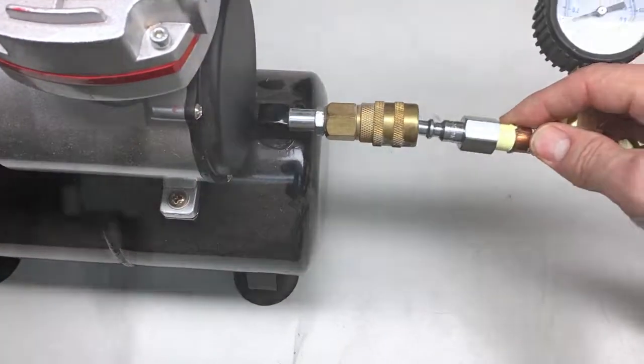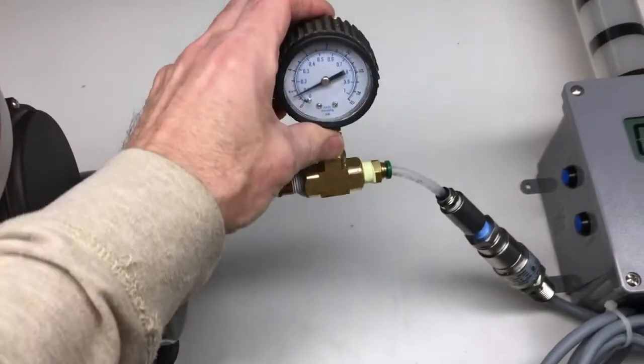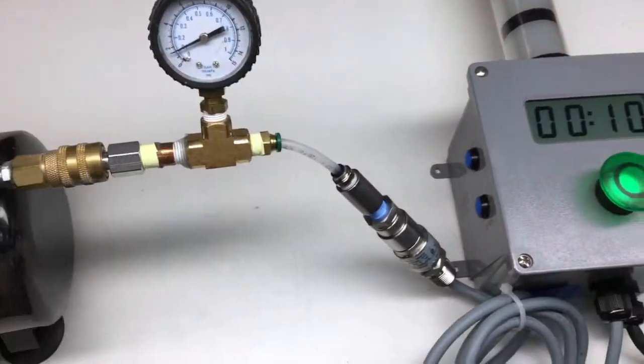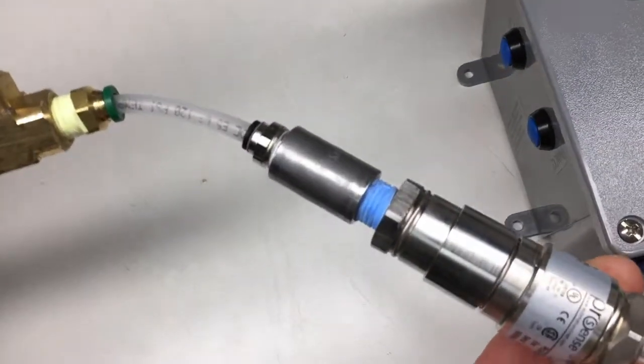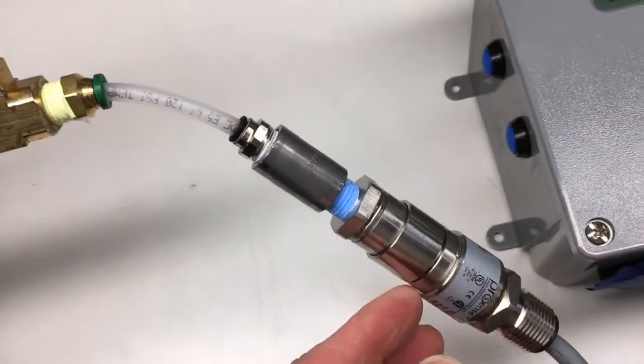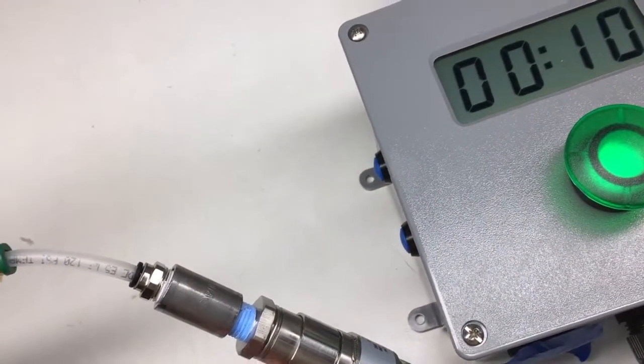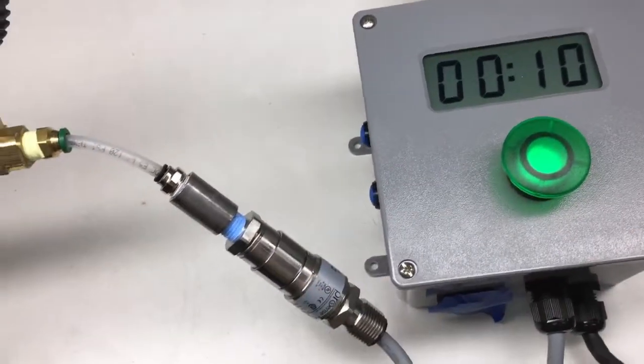So what I'm going to do is plug this in and what we'll see is when the pressure gets to 10 psi, in the case of this pressure switch, it's a ProSense. When it gets to 10 psi it'll close a switch which will activate our timer.